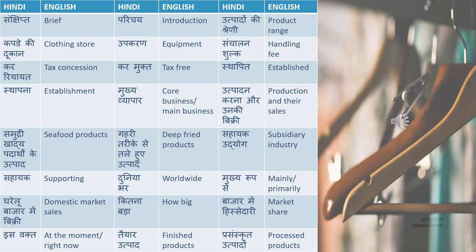Kar riyayat means tax concession, kar mukt means tax free. If you are told duty free, then you say shulk mukt — that would be duty free. Sthapit means established. Sometimes in dialogues it is said 'yeh company falana saal mein sthapit hui thi.' That way you have to remember this. Sthapna means establishment.